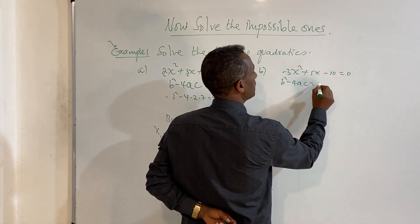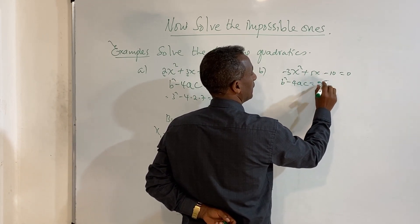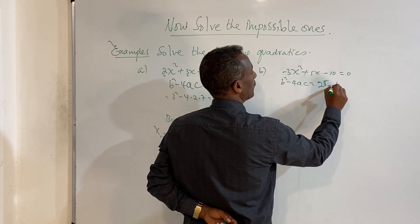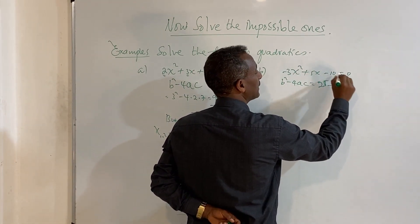B squared is 5 squared, 25, minus 4 times a is minus 3 times c is minus 1.